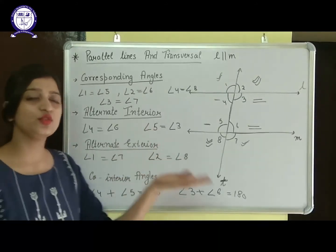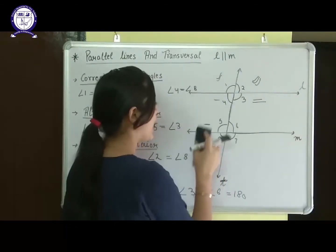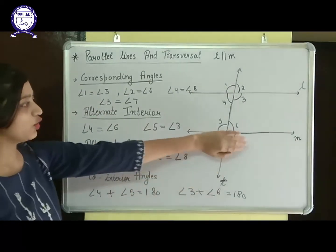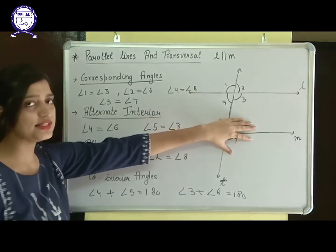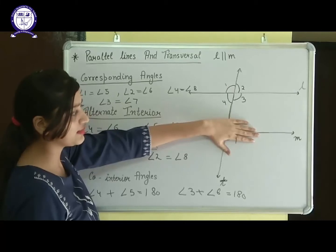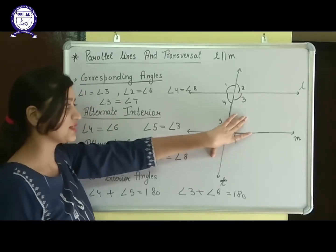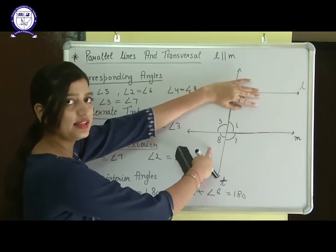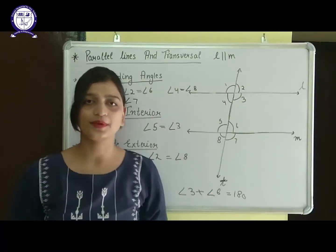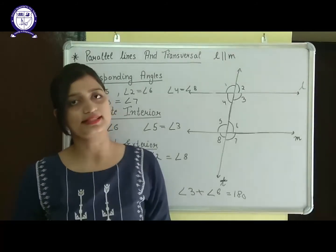The previous properties — linear pair and vertically opposite angles — can also be used in these questions. If you look at the figure and ignore one of the parallel lines, the remaining two lines are intersecting, so you can apply those earlier properties too. Basically, six properties can be applied here: four for parallel lines and two for intersecting lines.